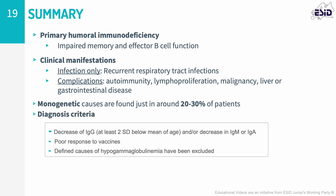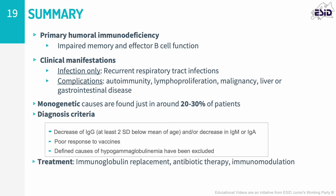To diagnose CVID, the patient must be over 4 years of age, have a markedly low IgG — two standard deviations below normal — and/or low IgA and IgM. An impaired vaccine response is also desirable for diagnosis, and secondary causes of low immunoglobulins should be excluded. Immunoglobulin replacement therapy is the cornerstone of therapy, together with prompt antibiotic treatment for infections. Management of non-infectious complications is challenging and can include immunosuppressive agents. Patients can sometimes be classified according to their B- or T-cell phenotype.